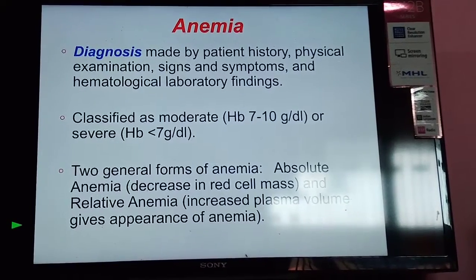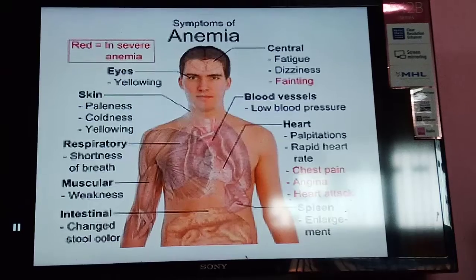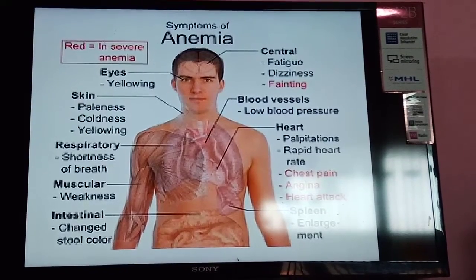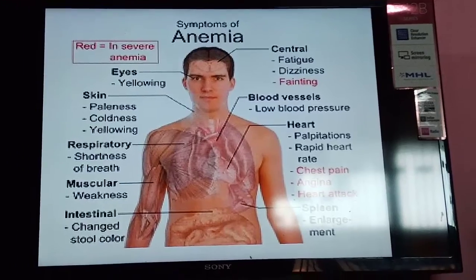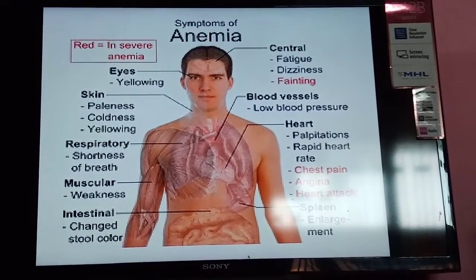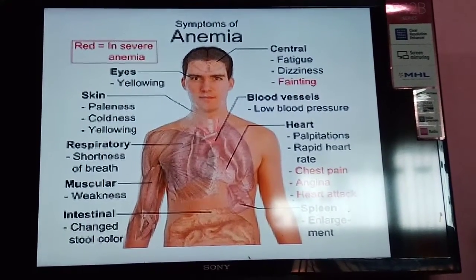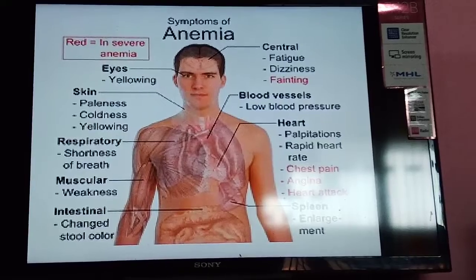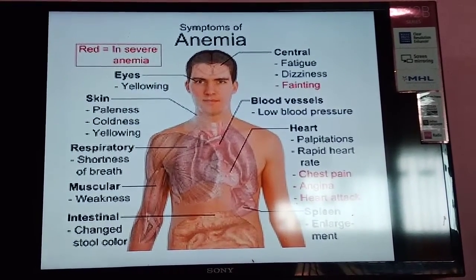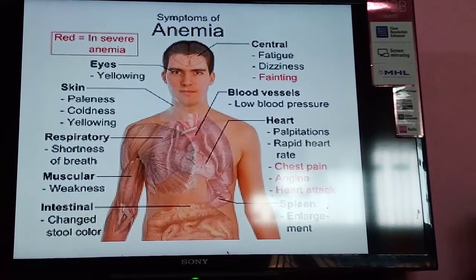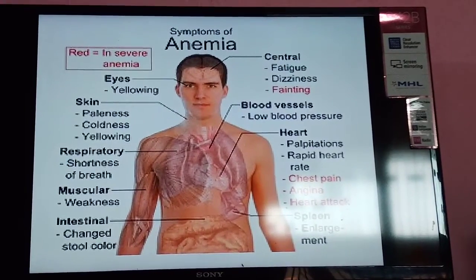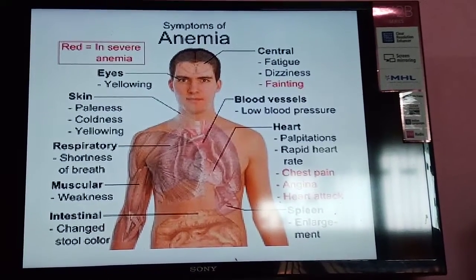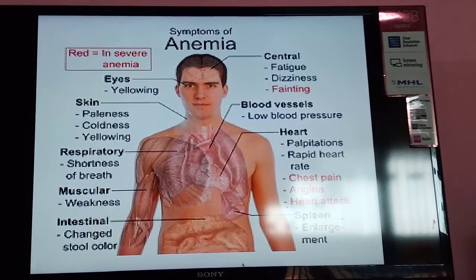A diagram shows the presentation of anemia, with red indicators for severe symptoms. In the eyes, there is yellowing; in the skin, paleness, coldness, and yellowing. Respiratory symptoms include shortness of breath or dyspnea. There is muscular weakness, intestinal changes with altered stool color, and centrally, fatigue, dizziness, fainting, and hypotension. In the heart, there is palpitation, rapid heart rate, chest pain, and angina, which may lead to heart attack. In severe anemia, there may also be splenomegaly.